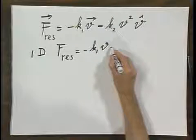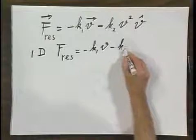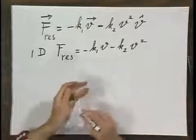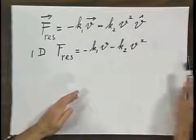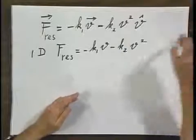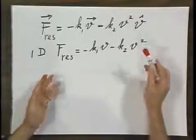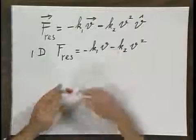Minus K2 times V squared. And so the minus signs now clearly indicate the fact that we're dealing with vectors.